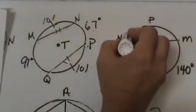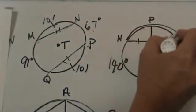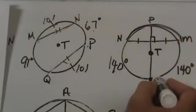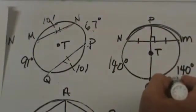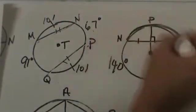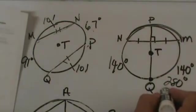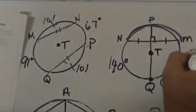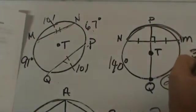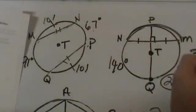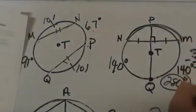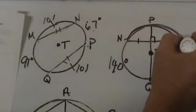We need to find the measure of arc MN. We have used up the circle with 140° and 140°, which is 280 degrees total. Taking 360 and subtracting 280 leaves us with 80 degrees. This arc MN is 80 degrees.